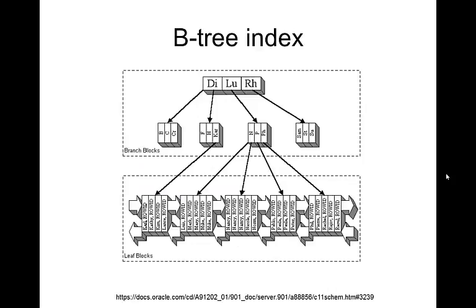Here's an example of what's called a B-tree index. You've got a whole load of records — records of names — and you want to be able to search them quite quickly. A B-tree index is a hierarchical tree structure which allows us to quickly locate particular rows. At the top level we have three nodes in our tree.